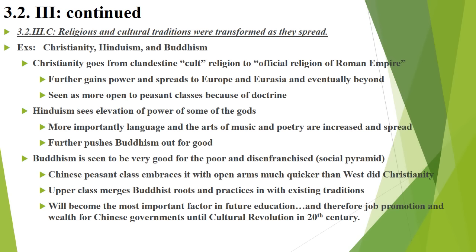3.2.3c: religious and cultural traditions are transformed. Great examples are Christianity, Hinduism, and Buddhism. Christianity goes from being a very clandestine, cultish type of religion — very small, very persecuted — to the official religion of the Roman Empire, thanks to Constantine and others. That will further gain power and spread to Europe, Eurasia, and eventually beyond, until it becomes one of the largest religions in the world.